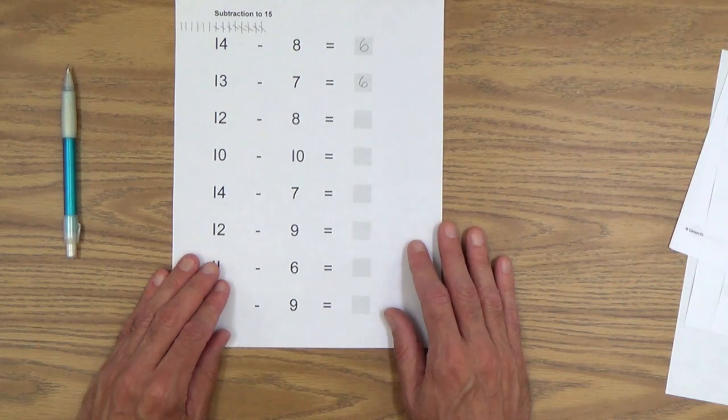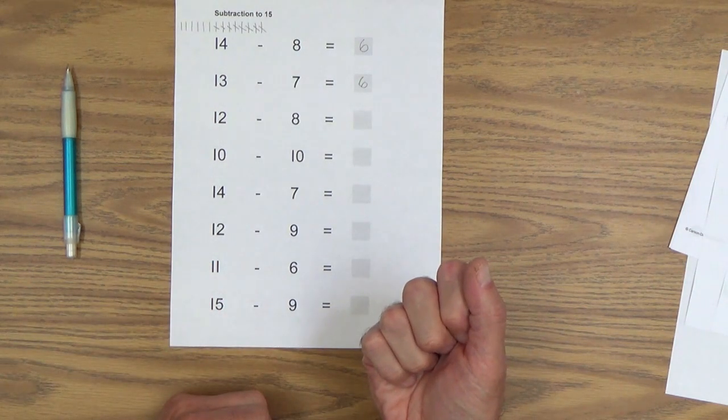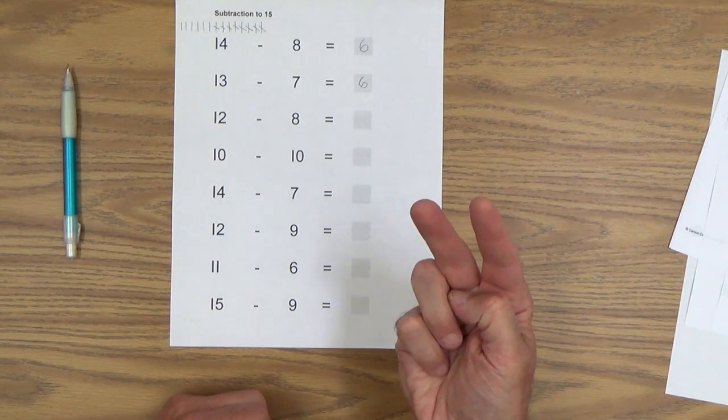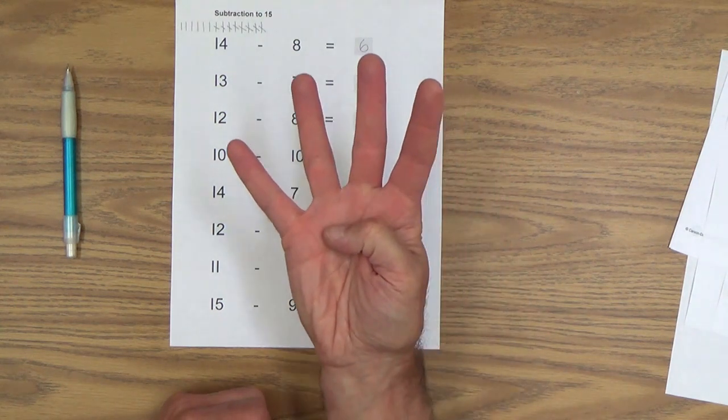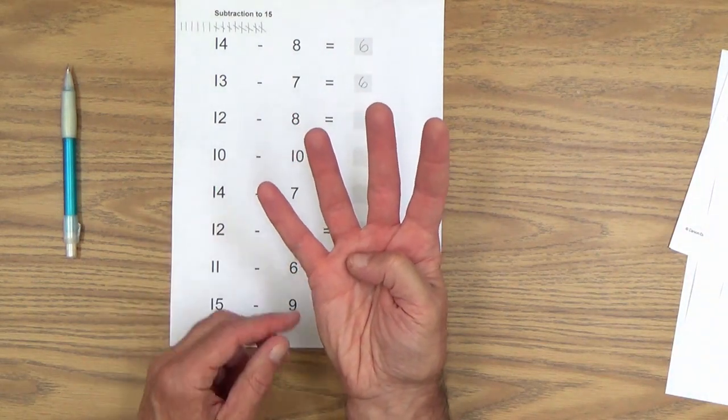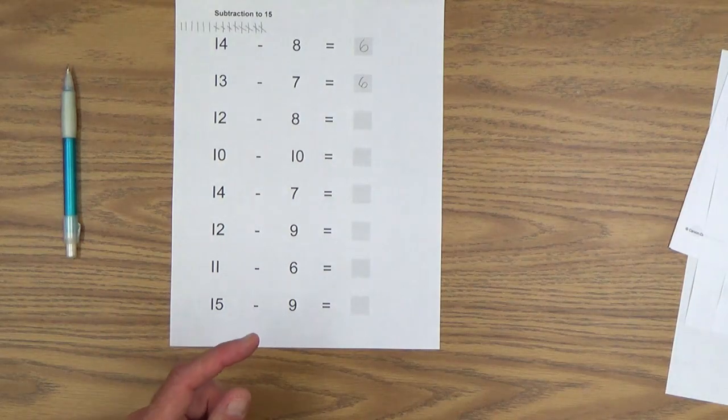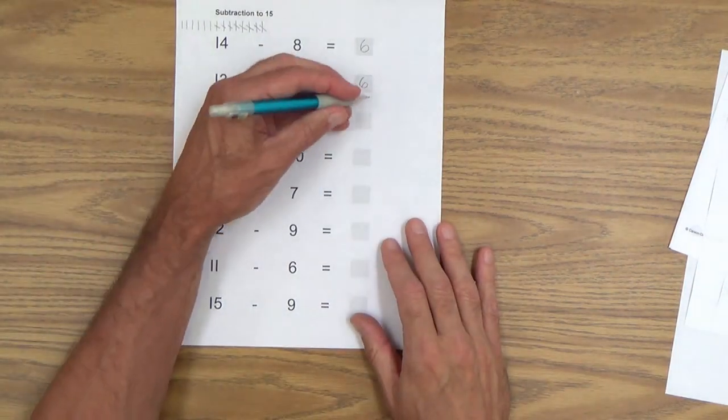12 minus 8 equals how many? Counting on from 8 up to 12: 8, 9, 10, 11, 12. And there is the answer, as your child can count them off one at a time, either like this 2, 3, 4, or on her cheek 1, 2, 3, 4. And there's the answer.